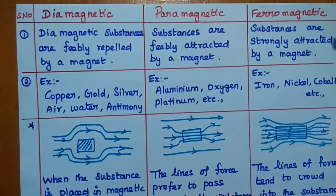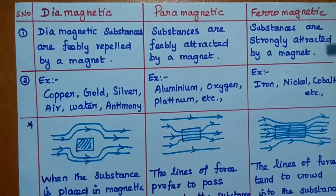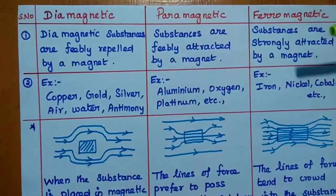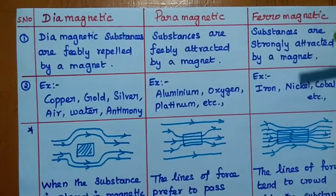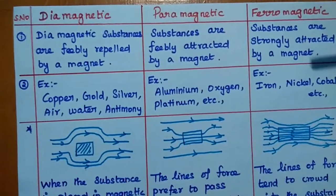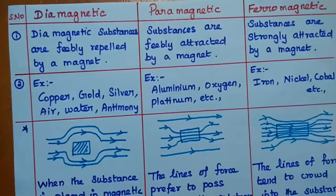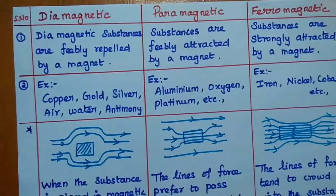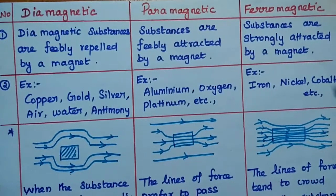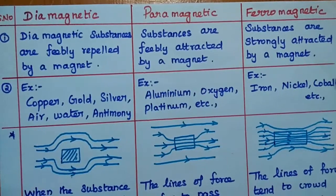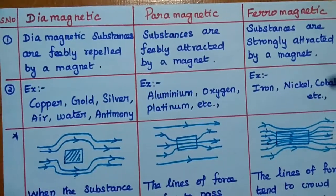Diamagnetic materials are the substances which are feebly repelled by a magnet — they do not have strong magnetic properties. Paramagnetic materials are substances which are feebly attracted by a magnet — not strongly, but feebly attracted. The third category is ferromagnetic, where the substances are strongly attracted by a magnet.